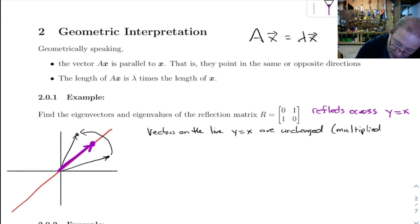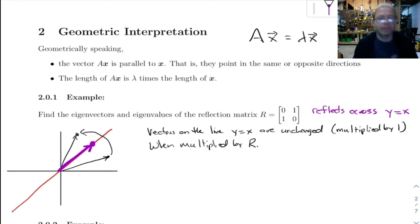The other way of saying that is they're multiplied by 1 when multiplied by R. I call this matrix R for reflection. So the eigenvalue is 1.